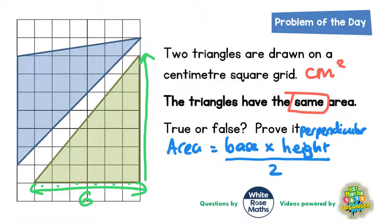Then the height is the straight-up perpendicular height. Perpendicular means the height which makes a right angle with the base. So if you imagine a right angle in the corner, the perpendicular height is the line that goes straight up to the top of the triangle at right angles to the base. Counting that: one, two, three, four, five, six, seven squares — so the perpendicular height is seven.